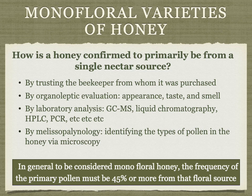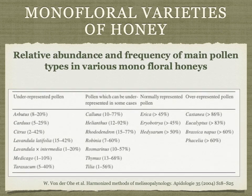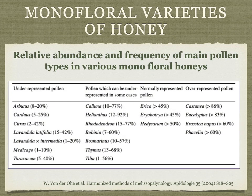In general, to be considered a monofloral honey, the frequency of primary pollen must be 45% or more from that source — though this rule is not set in stone. Some honeys are underrepresented in pollen, such as citrus, lavender, alfalfa, and dandelion. On the other hand, some honeys are overrepresented — chestnut is a classic example. Chestnut pollen needs to be more than 85% or even 90% to be considered monofloral, because it is an overrepresented pollen in honey.